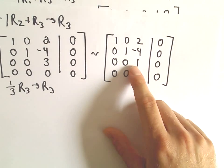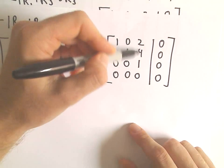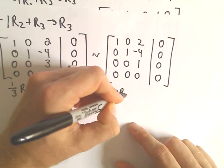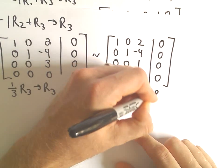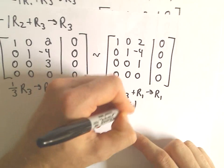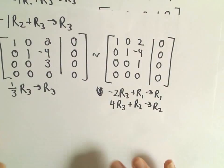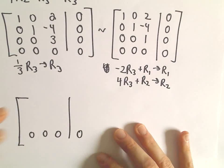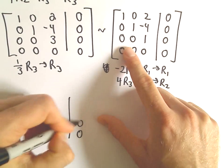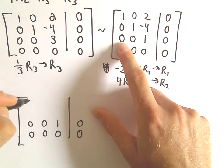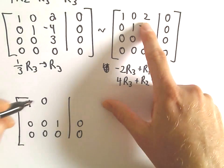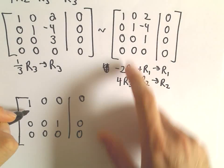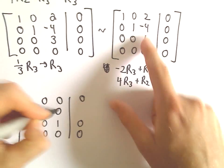And notice now what's going to happen is we can basically just zero out the rest of the entries in the third column. So we'll do negative 2 times row 3 and add that to row 1 to get our new row 1. And then we'll do 4 times row 3 add that to row 2 to get our new row 2. The bottom row is 0, 0, 0, 0. The third row we're leaving alone. We'll have 1, 0, 0, 0. And we'll get 0, 1, 0, 0.